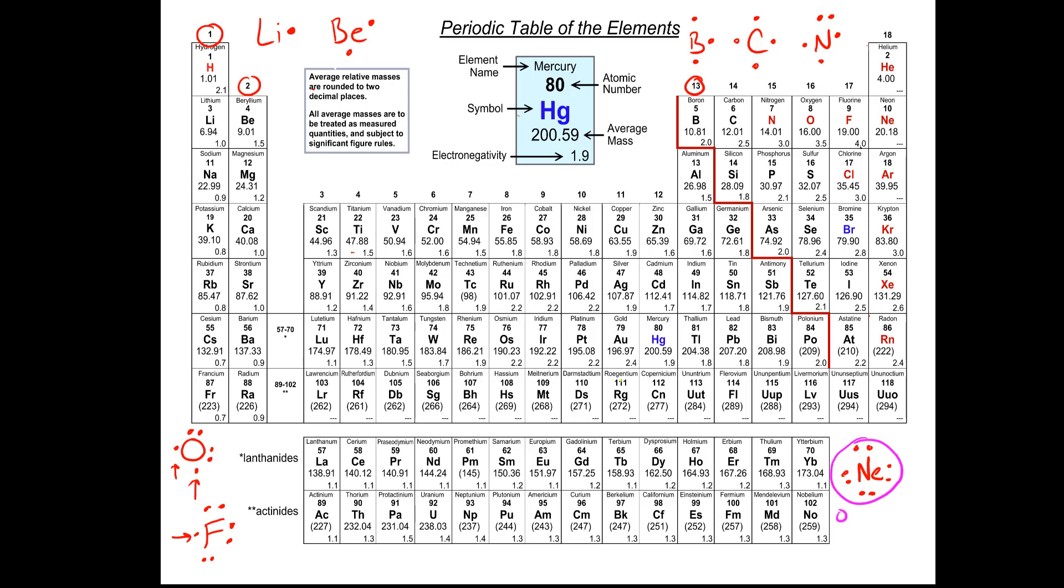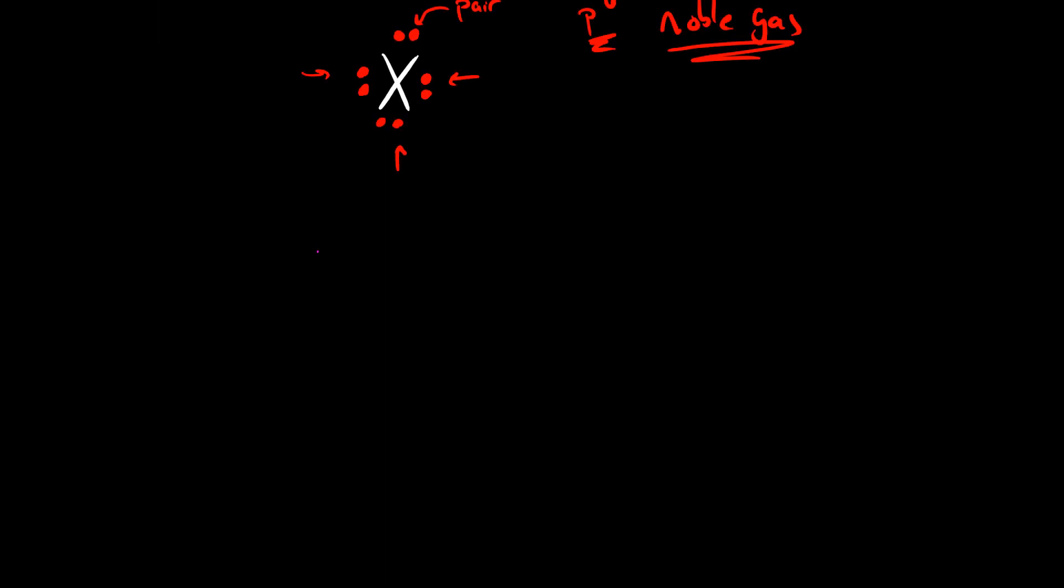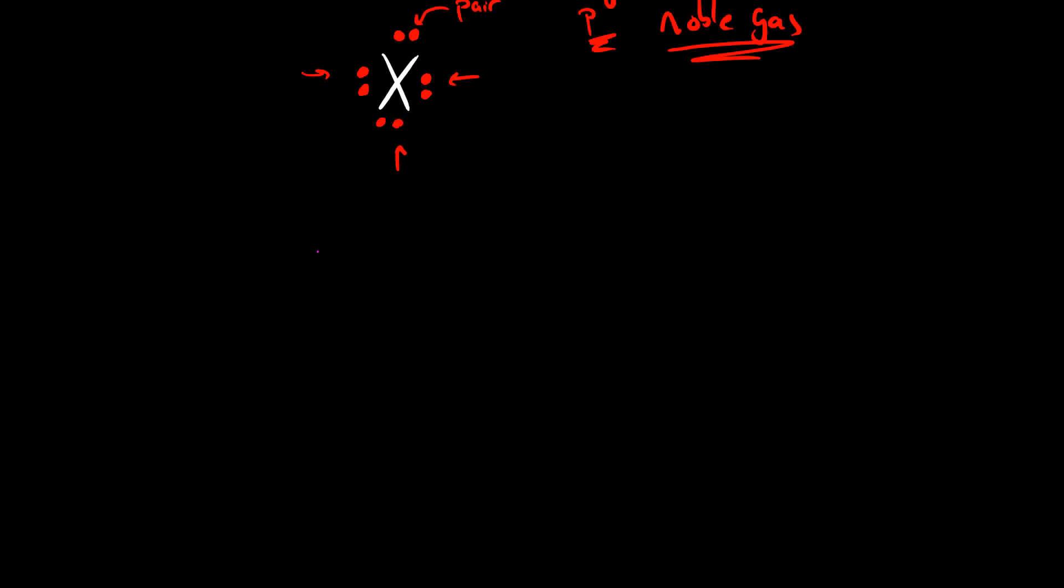We call this an octet. Octets are really stable. So let's go ahead and switch back to the other page here. So let's think about fluorine and chlorine.